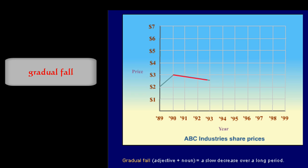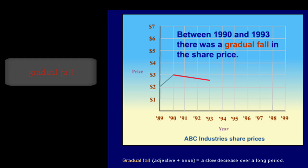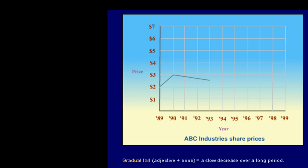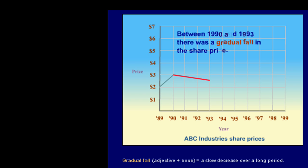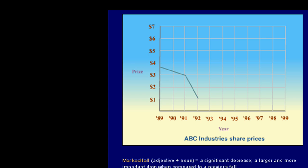Gradual fall. Between 1990 and 1993 there was a gradual fall in the share price. Gradual fall. You can also say that the share price fell gradually.